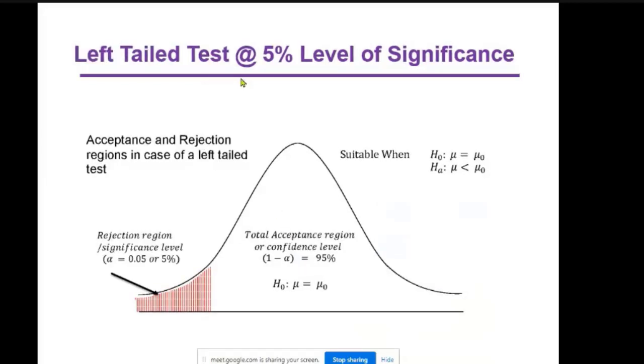Left-tailed test at 5% level of significance. Acceptance and rejection regions in case of left-tailed test. Five percent is the rejection region, and 95% is the accepted region or confidence level, one minus alpha. Here alpha means 5%. The null hypothesis is population mean equals hypothetical mean. In the alternative hypothesis, population mean is less than the hypothetical mean.